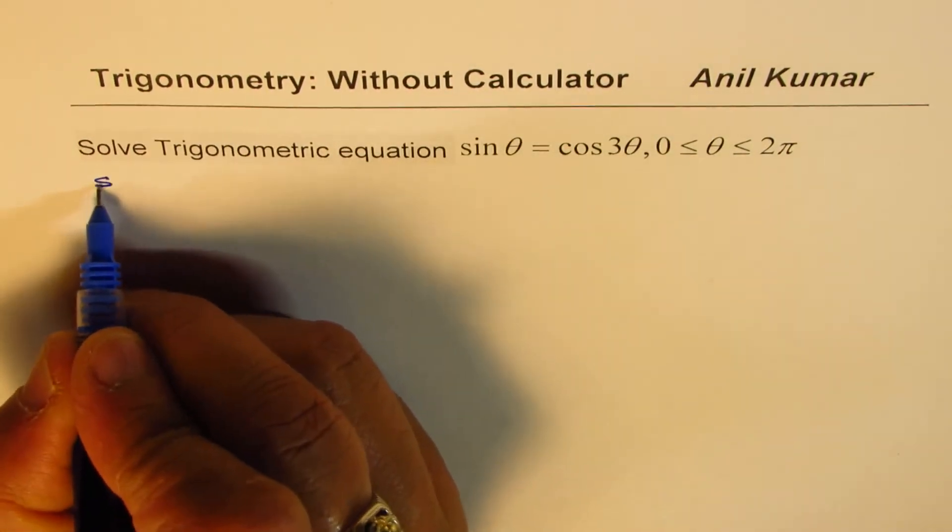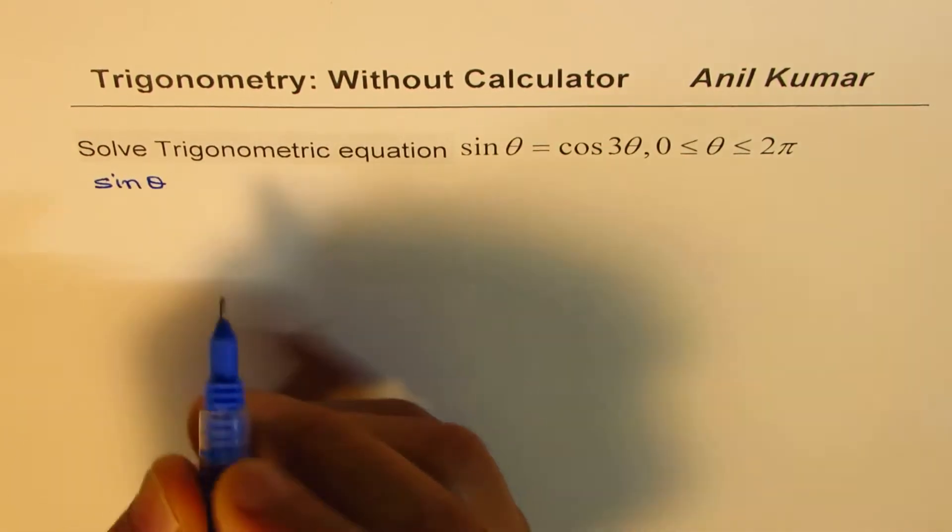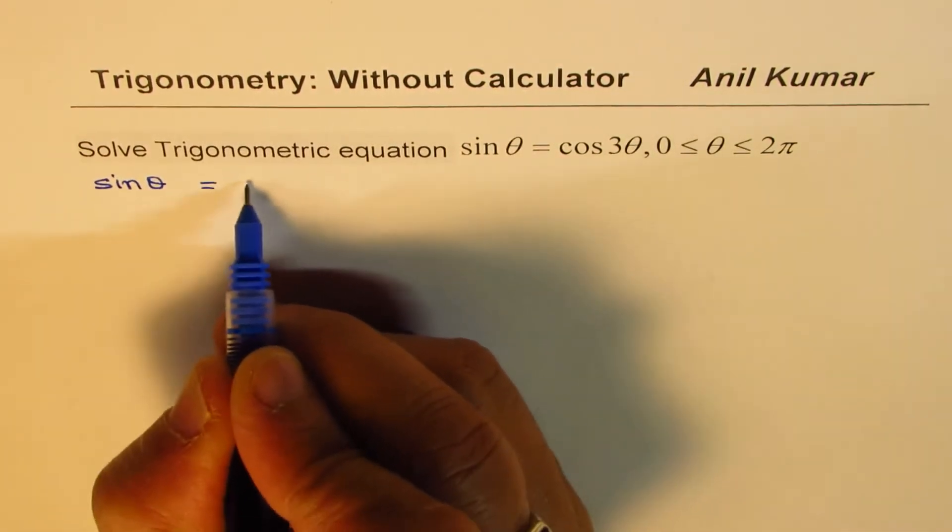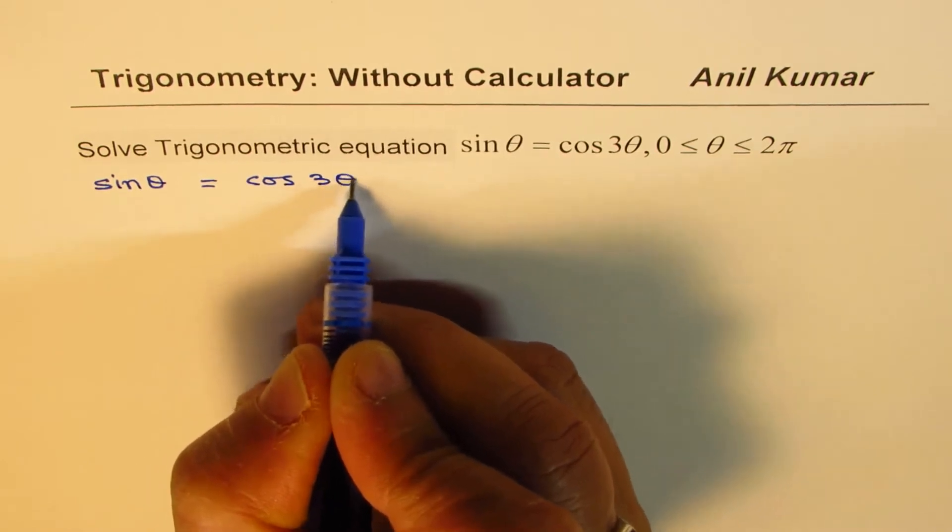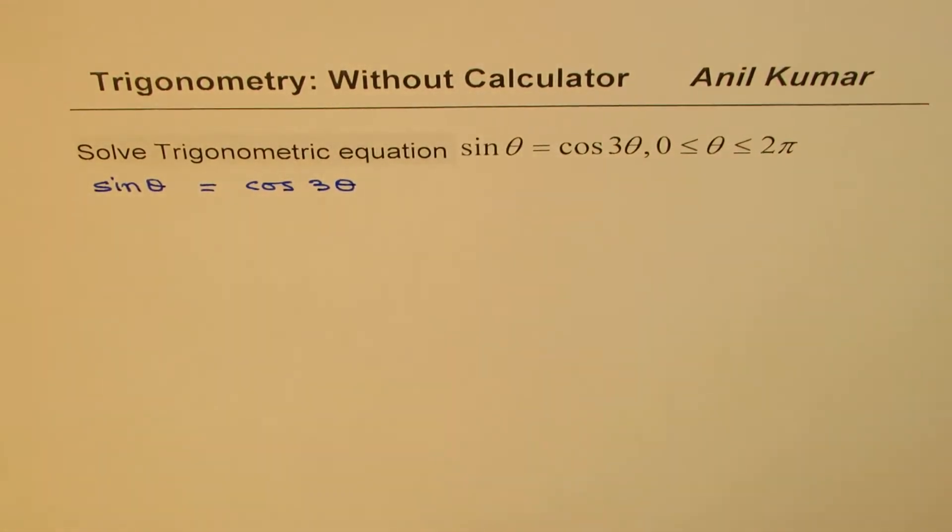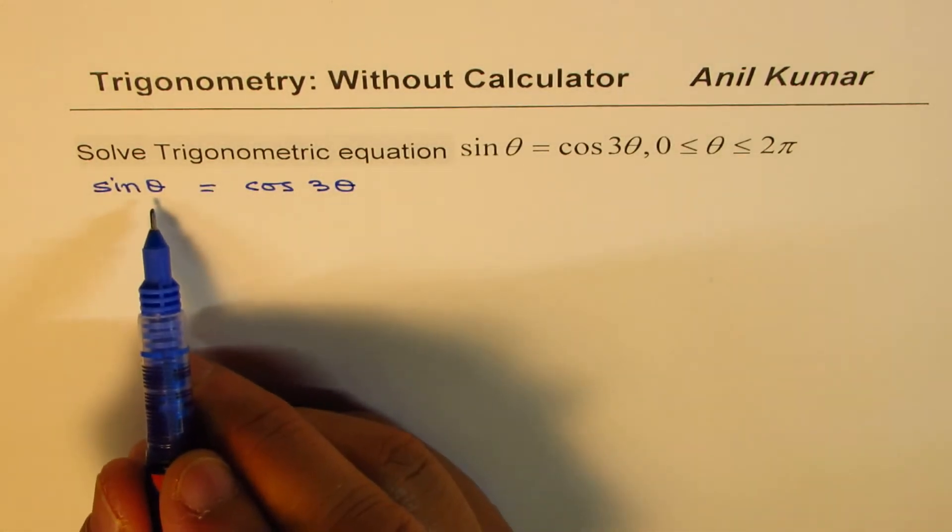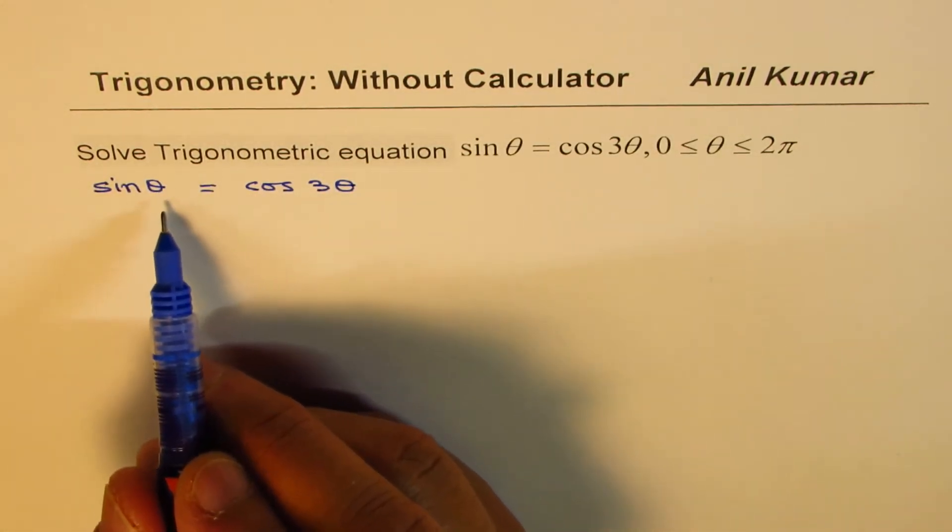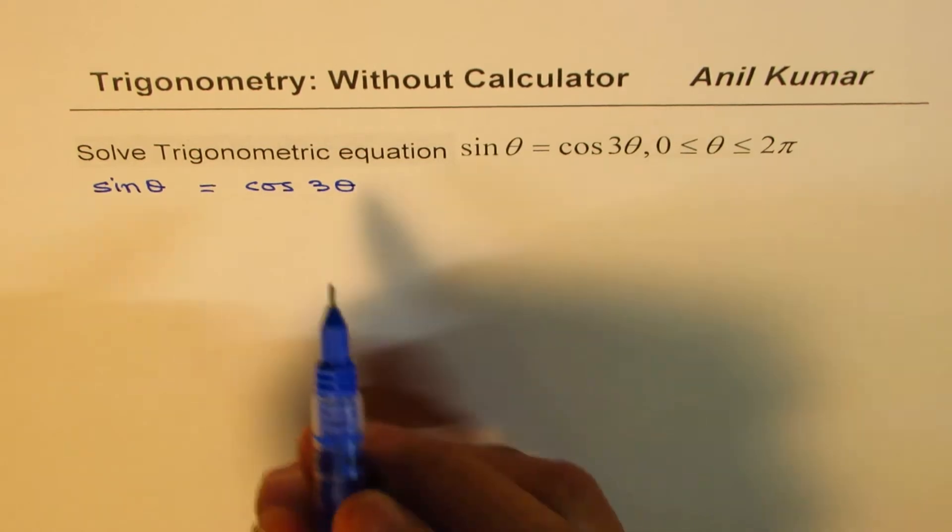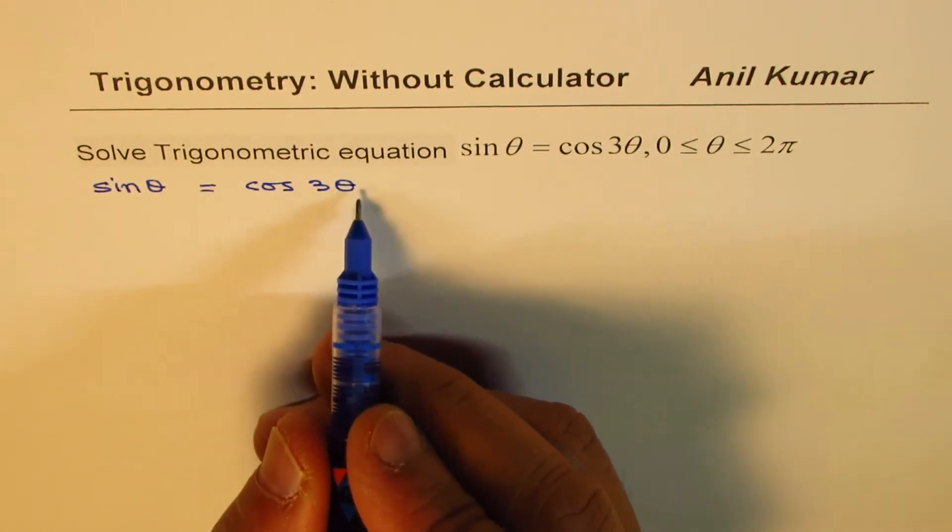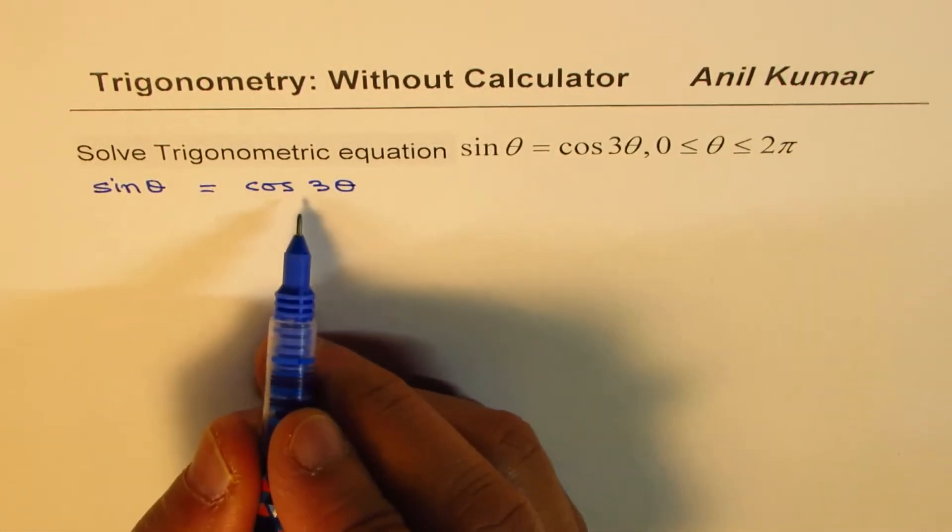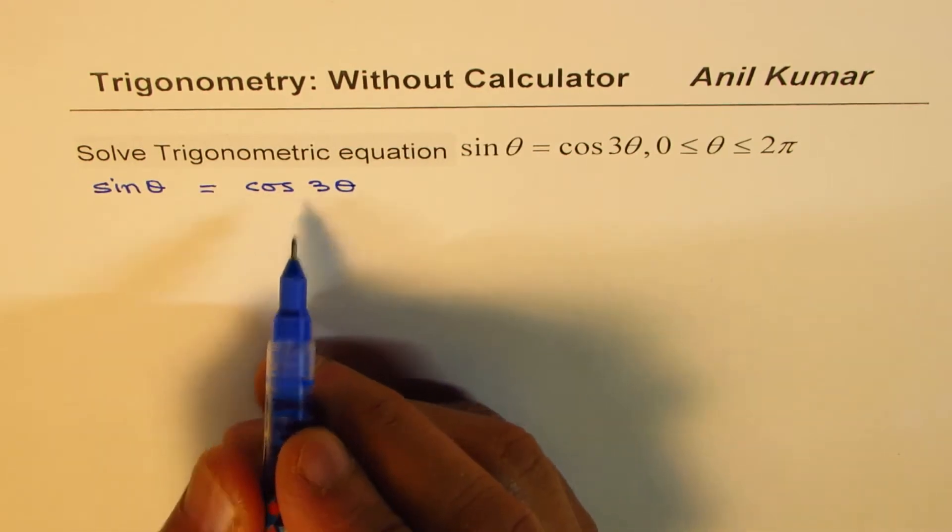So we have to find the value of theta where sine theta is cos of 3 theta. Now in such questions, what we can do is write theta as 2 theta minus theta and 3 theta as 2 theta plus theta. That will help us simplify and get the solution.